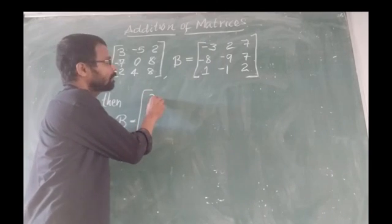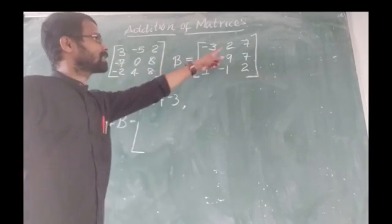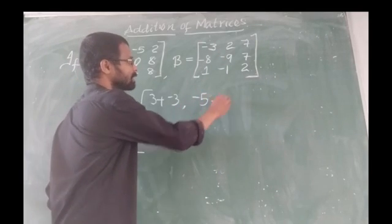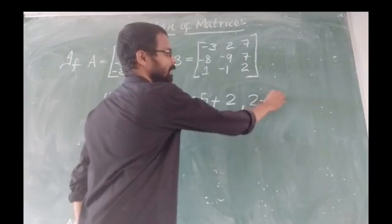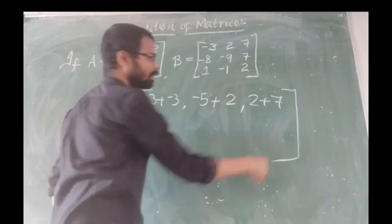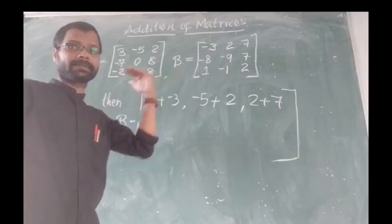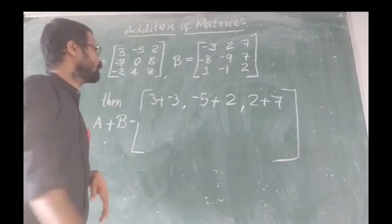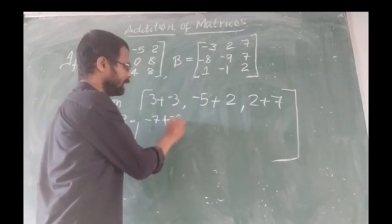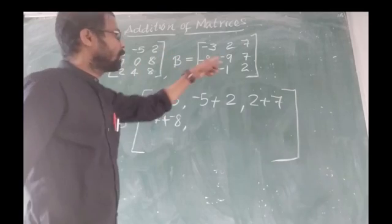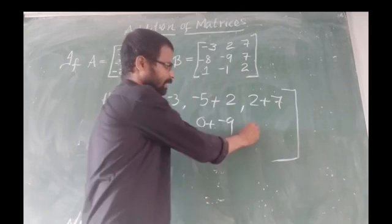So: 3 plus minus 3, then minus 5 plus 2, then 2 plus 7. Next row: minus 7 plus minus 8, then 0 plus minus 9, then 8 plus 7.